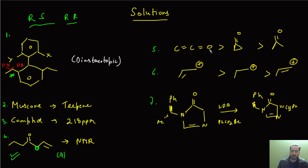There was a question on IR stretching frequency. Ketene will have the highest stretching frequency, followed by cyclopropenone, and then finally the simple ketone. Then there was another simple question based on carbocation stability: allylic carbocation, followed by primary carbocation, and then vinyl carbocation — that is the correct order of stability.